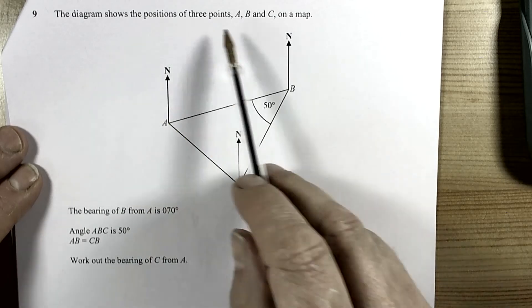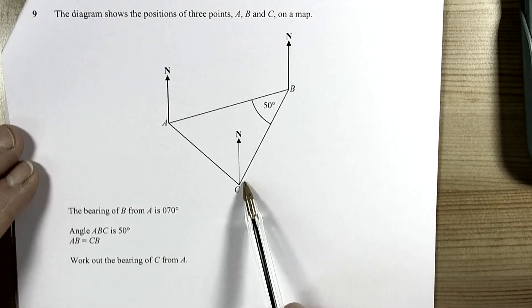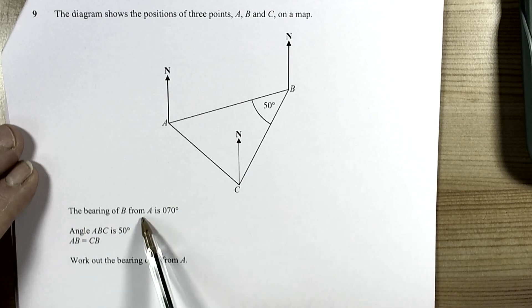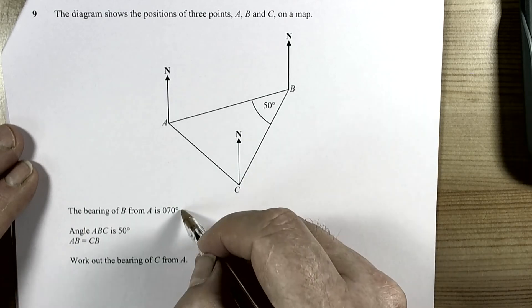Ok, so this question talks about the positions of points on a map. It says the bearing of B from A is 070.